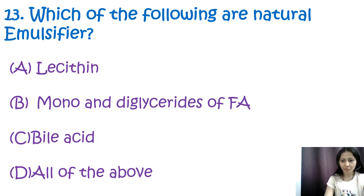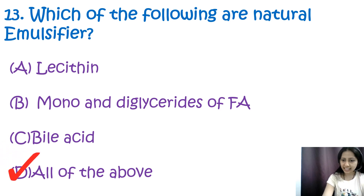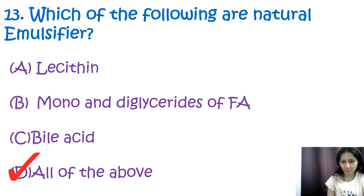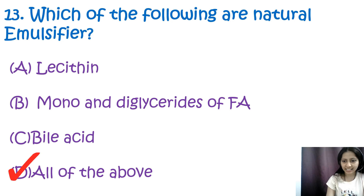Question 13: Which of the following are natural emulsifiers? Options are lecithins, mono- and diglycerides of fatty acids, bile acids, and all of the above. The correct answer is D, all of the above. Lecithins are natural emulsifiers found in egg yolk and soybeans. Mono- and diglycerides of fatty acids are types of fats that act as emulsifiers, produced from glycerol and natural fatty acids. Bile acids are also natural emulsifiers found in the liver and stored in the gallbladder.